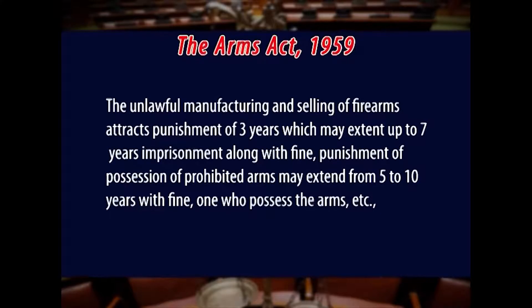The unlawful manufacturing and selling of firearms attracts punishment of three years which may extend up to seven years imprisonment along with fine. Punishment for possession of prohibited arms may extend from five to ten years with fine. One who possesses arms with intent to use them for unlawful purpose is punishable with imprisonment which may extend to seven years with fine. One who causes death by using such weapons shall be punished with death penalty. One who knowingly buys arms from a person who is not authorized to sell them may face imprisonment up to three years with fine.